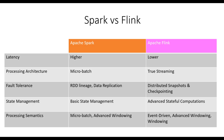Let's start by introducing Apache Spark and Apache Flink. Both are distributed stream processing frameworks that offer powerful capabilities for processing and analyzing data in real-time. To better understand the differences between Spark and Flink, let's compare them side-by-side.